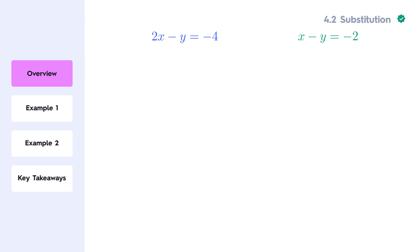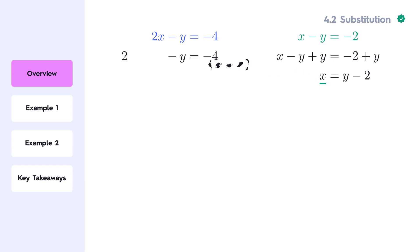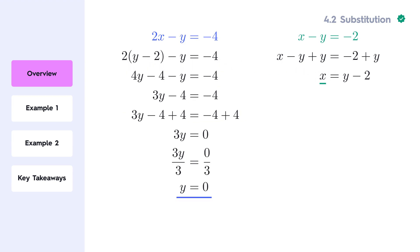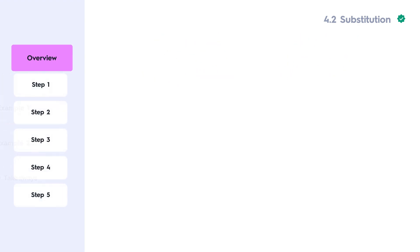The substitution method is based on the idea of solving one equation for one variable and then substituting that solution into the other equation to find the value of the second variable. This then allows us to get the value of the first variable. Let's break this down step by step.